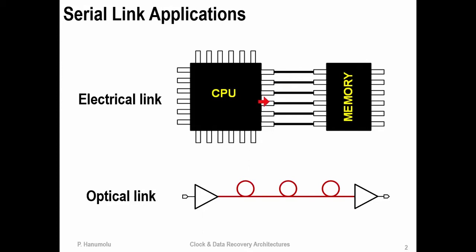On the other hand, for very long-haul communication, with distances on the order of several thousands of kilometers, optical communication links are commonly used. I will refer to these links — whether between CPU to memory or optical long-haul links — as serial links. Today, we are going to talk about how to recover data on the receiver side. And before I do that, let me just very quickly show you what a serial link looks like.